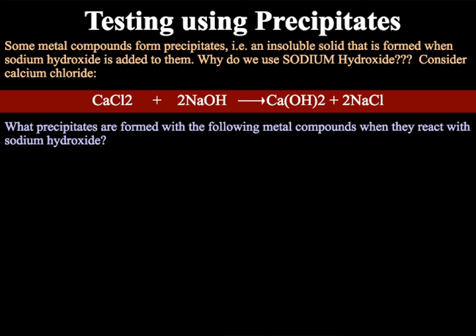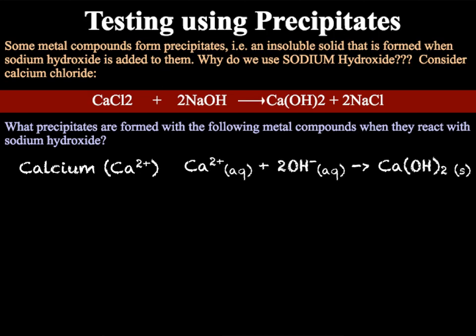We will now look at a selection of metal ions. First, we have calcium or Ca2+, which forms a white precipitate. We have our calcium ions Ca2+ which are aqueous, and we add them to our 2OH- again in an aqueous state, to form our insoluble salt, calcium hydroxide, which is solid. This is our ionic equation, as we are dealing exclusively with the ions. We are not interested in the second part of the metal compound — for example, if it's a chloride — neither are we interested in which hydroxide this is. Next, we have copper 2, which is Cu2+, giving us a blue precipitate, with the ionic equation being the same as for calcium but with copper.